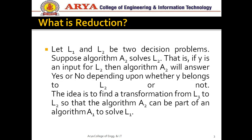Next, what is reduction? This topic is also known as reducibility. In this, we reduce one problem into another problem and take a decision based on this — if one problem is solved in polynomial time then the another problem is also solved in polynomial time. We assume L1 and L2 to be two decision problems, and assume there is an algorithm A2 that solves the problem L2. That is, if y is the input for L2 then the algorithm A2 will answer yes or no depending upon whether y belongs to L2 or not. The idea is to find a transformation from L1 to L2 so that algorithm A2 can be part of algorithm A1 to solve L1.